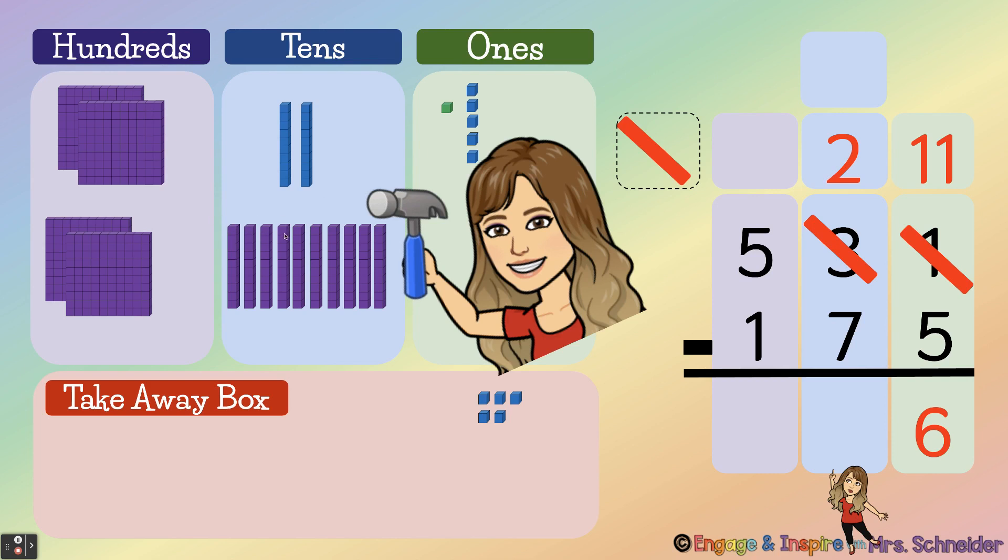One, two, three, four, five, six, seven, eight, nine, ten. Okay, because ten tens equals one hundred.